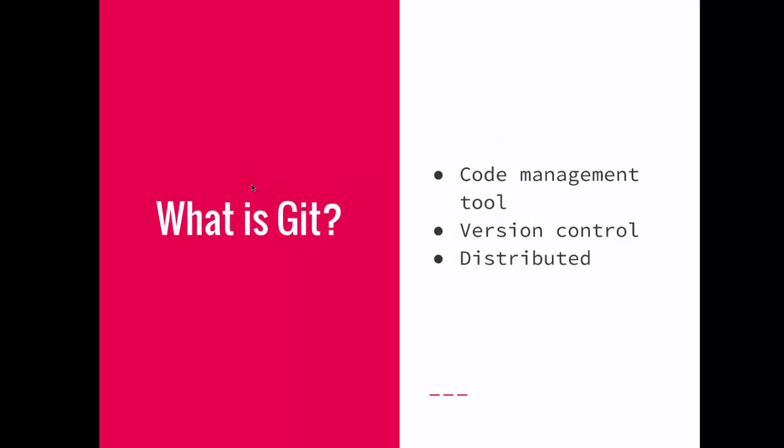So what is Git? Git is a code management tool, a version control system — think document management for software. If developer A goes out and makes a change to a file, and developer B is working on the same file, you don't want them overwriting each other's work. What Git does is it allows each individual person working on the code base to have a complete copy of the entire website locally and make their changes, and then commit those changes up to a remote version, which is then deployed on an actual website.